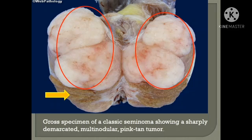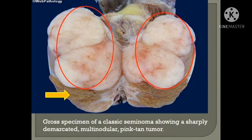Here is the gross specimen of seminoma. I have highlighted the tumor tissue in red circles. You can appreciate the yellow arrow pointing to the normal testicular parenchyma. When compared to normal testicular parenchyma, the tumor tissue appears to be bulging out from the testicular surface.